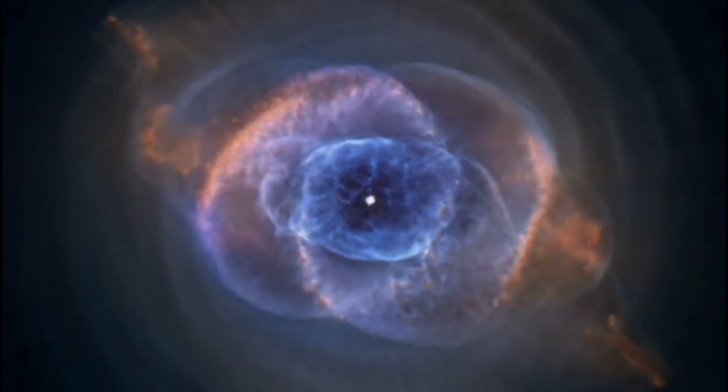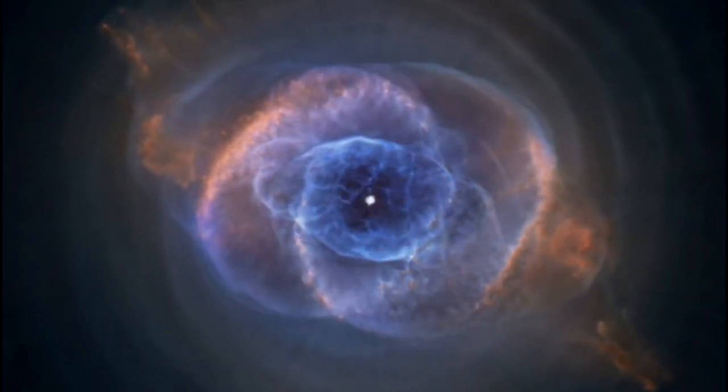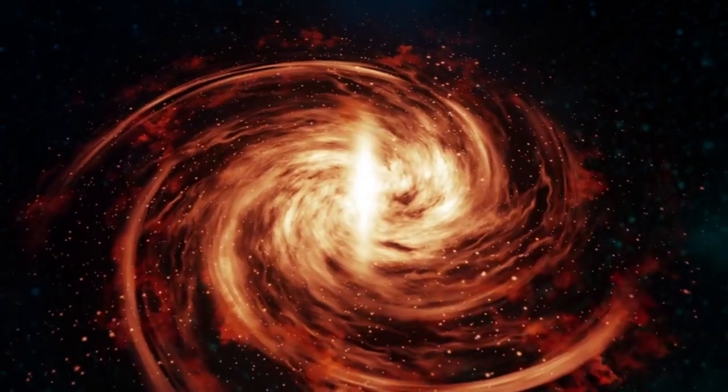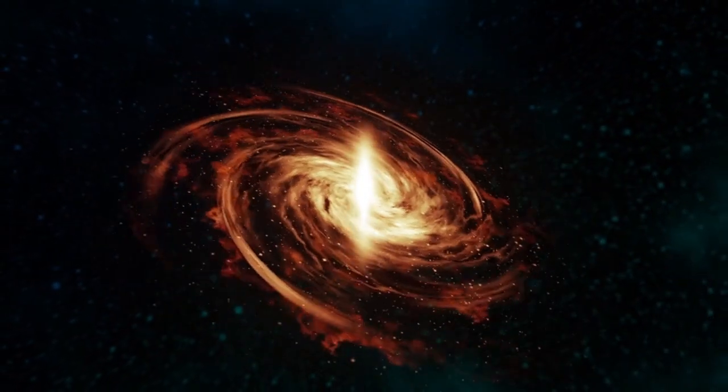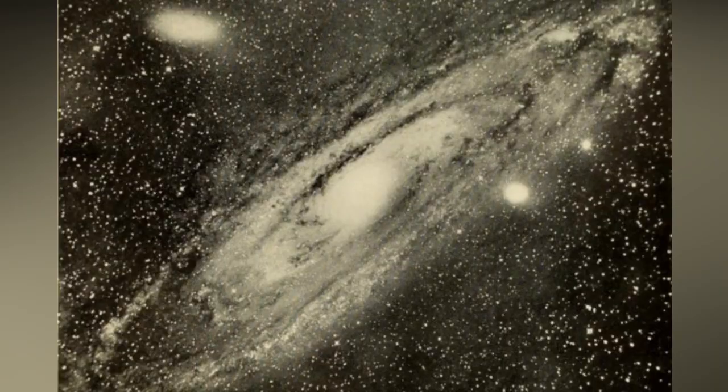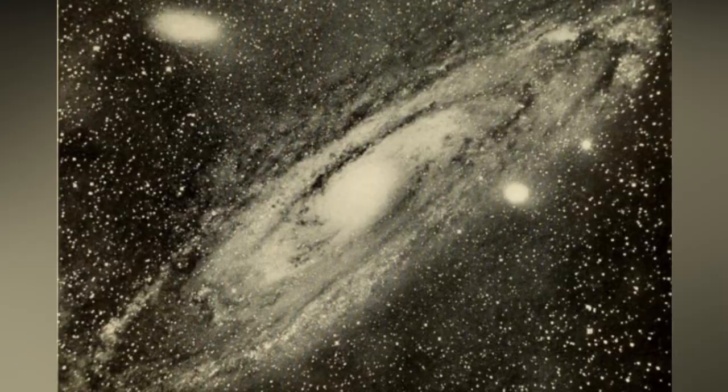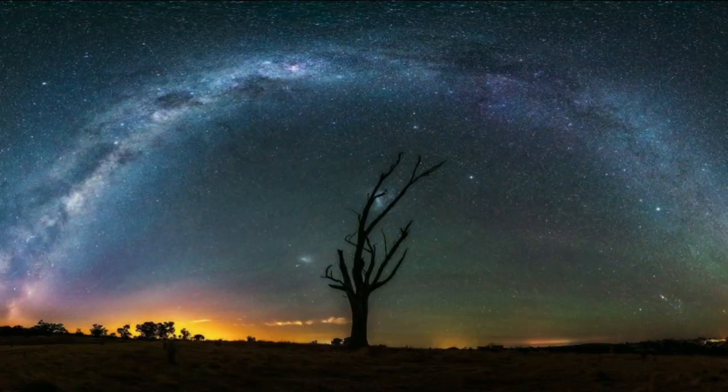All across the sky, observers had documented intriguing spiral nebulae, swirls of light that resembled ghostly pinwheels in space. The most famous one, the Andromeda Nebula, was so prominent that it was easily visible to the naked eye on a dark night.